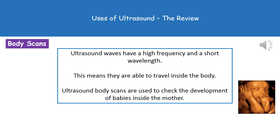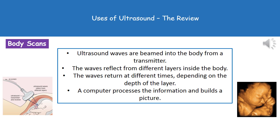What we tend to use ultrasound for — probably how we've heard of it in the past — is to scan the body and check the development of babies while they're still inside the mother. These ultrasound scans work by starting with a transmitter that beams ultrasound waves into the body. Once those waves hit something inside, they reflect back, and depending on when they return — determined by how deep the layer is — we get different times. Those times are then processed by a computer to build a picture on the screen of the baby.